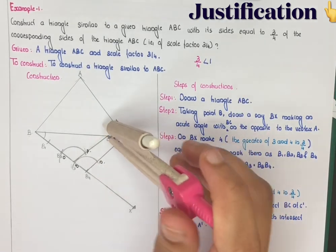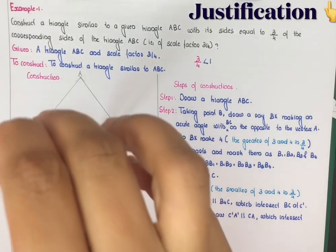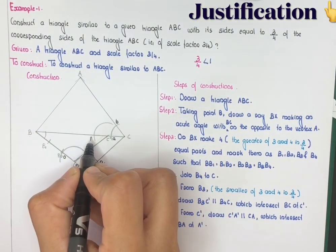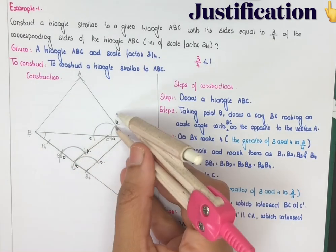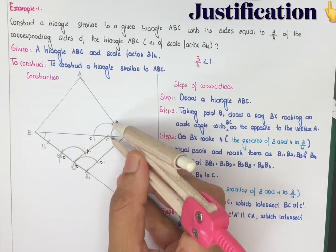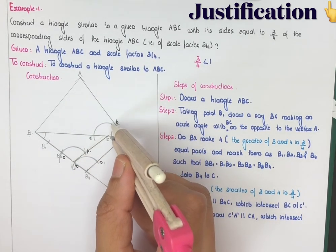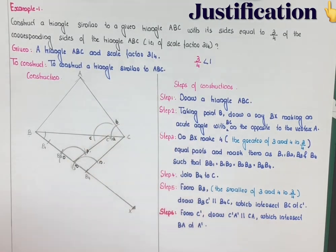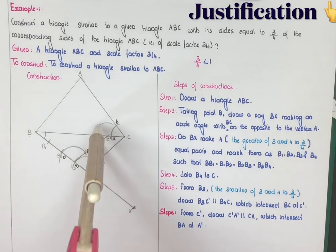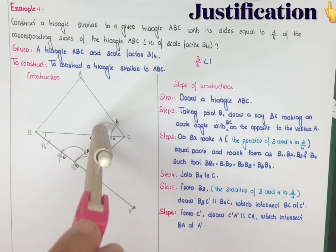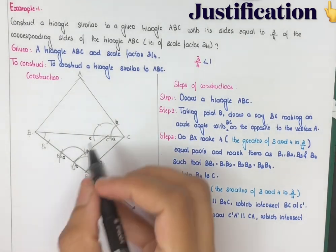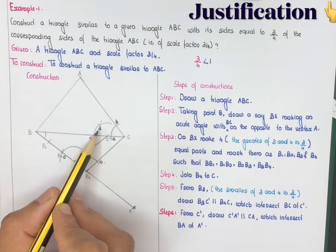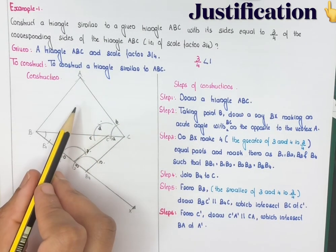With the same measurement, place the compass pin at A' and draw an arc. Measure the arc length along CA, then with the same measurement place the compass at the corresponding point on C'A' to mark point A'. Join C' to A'. This completes the construction.